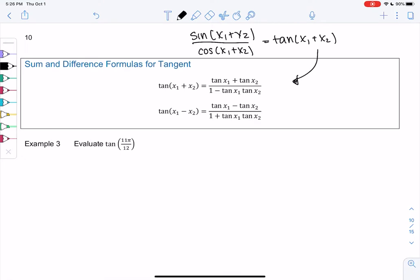So again, these are useful for angles that aren't on the unit circle, but maybe could be made from angles on the unit circle. So like tangent of 11π over 12. We don't know the values of over 12 on our unit circle, so let's write it in terms of angles that we know.